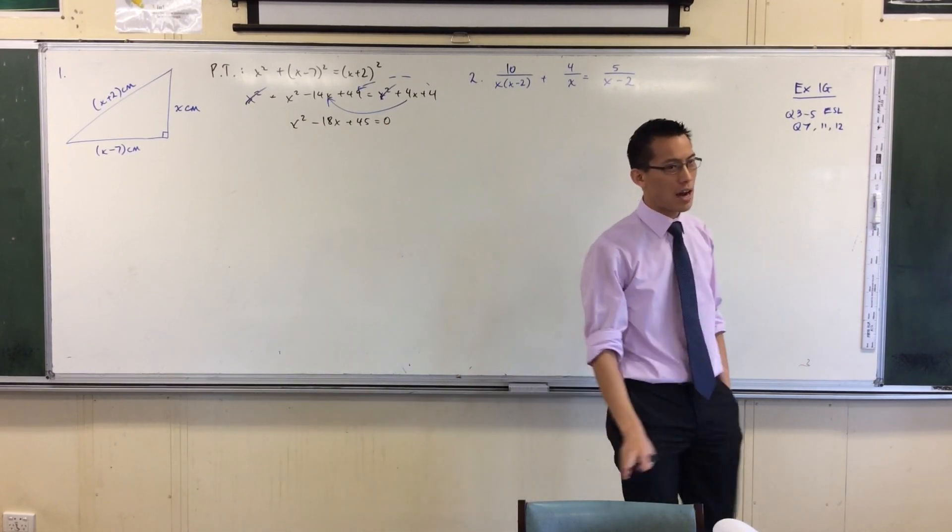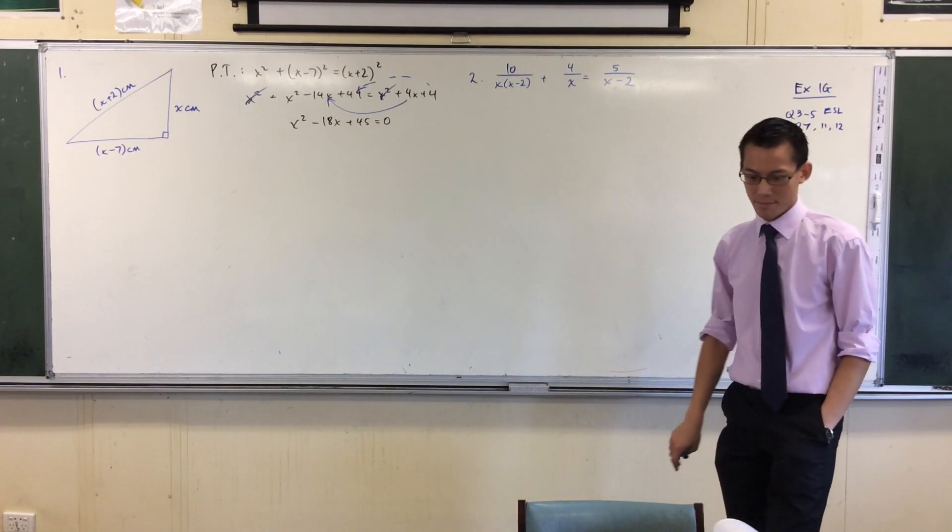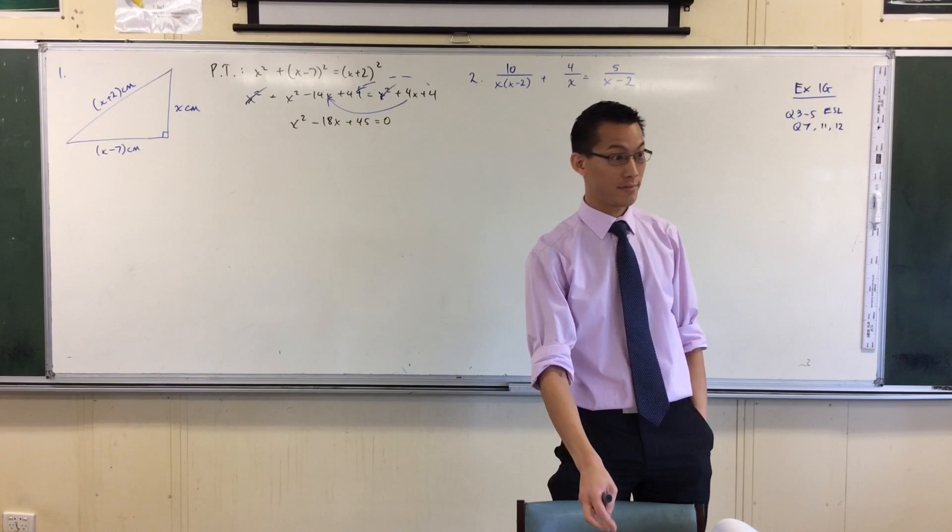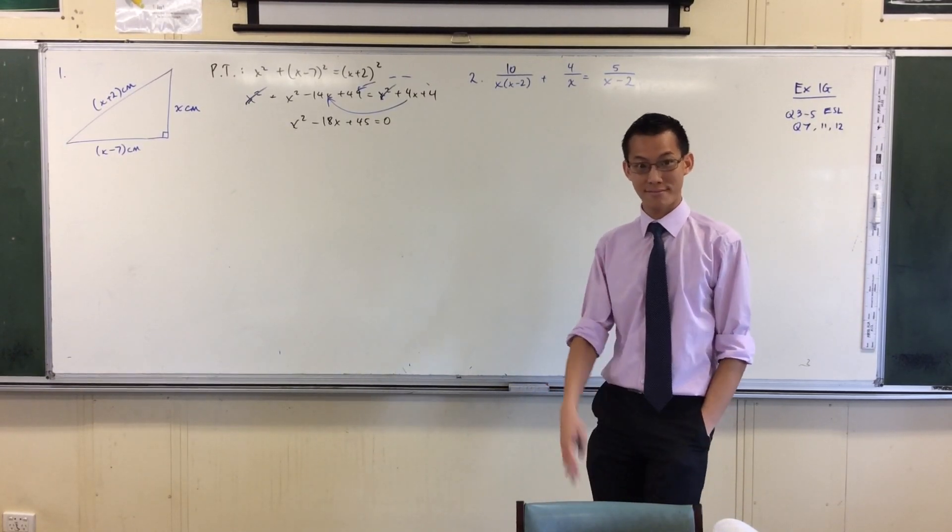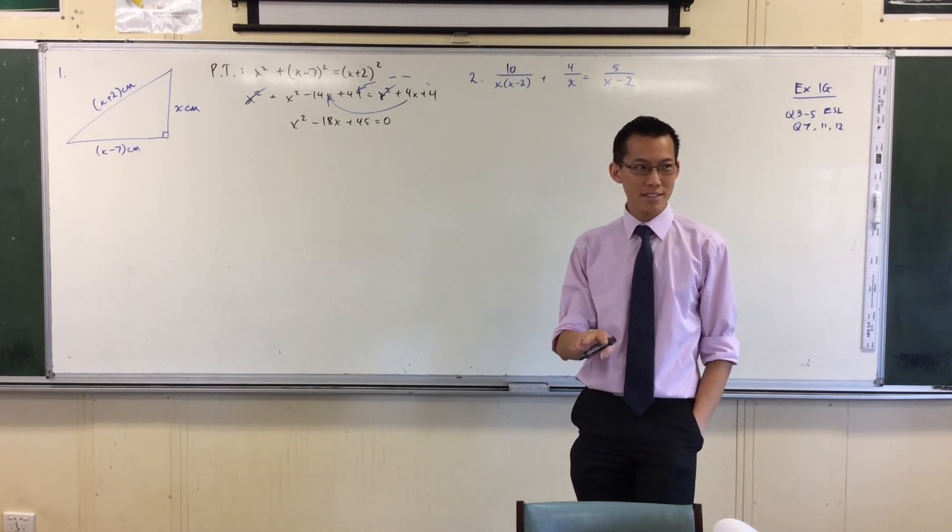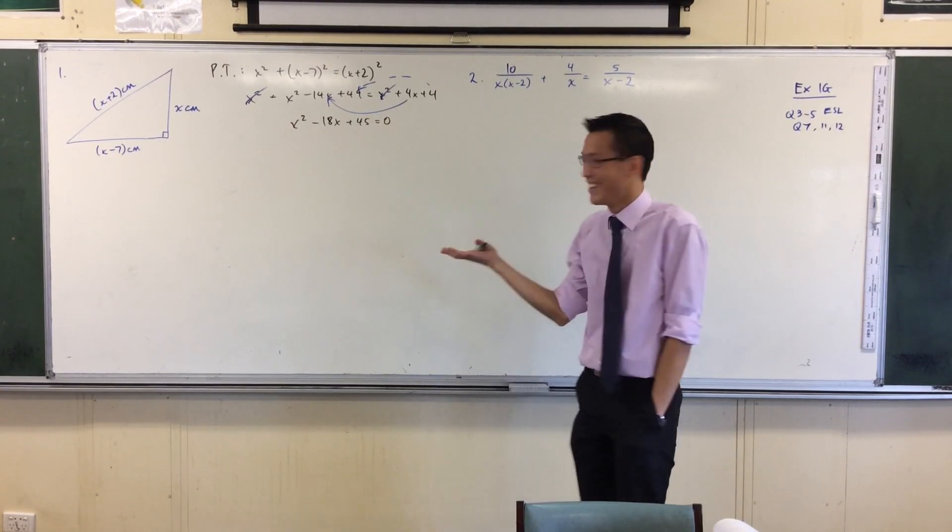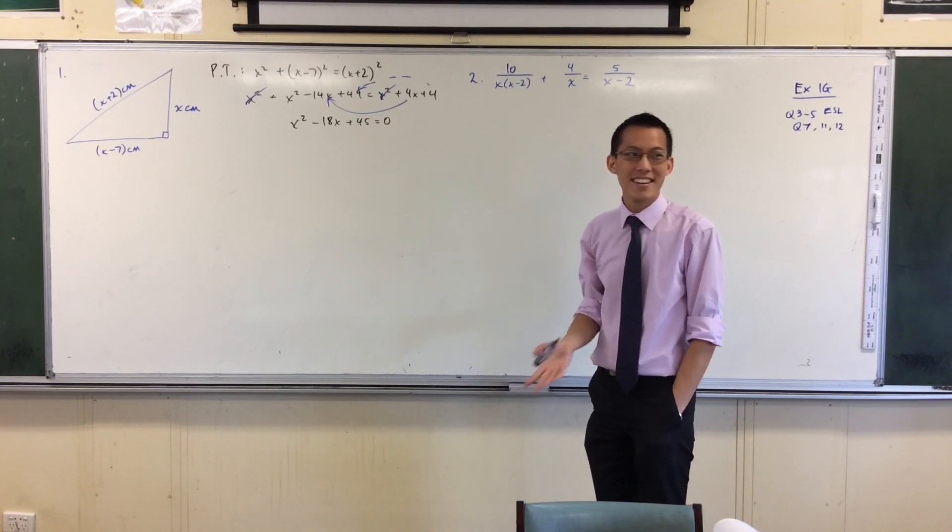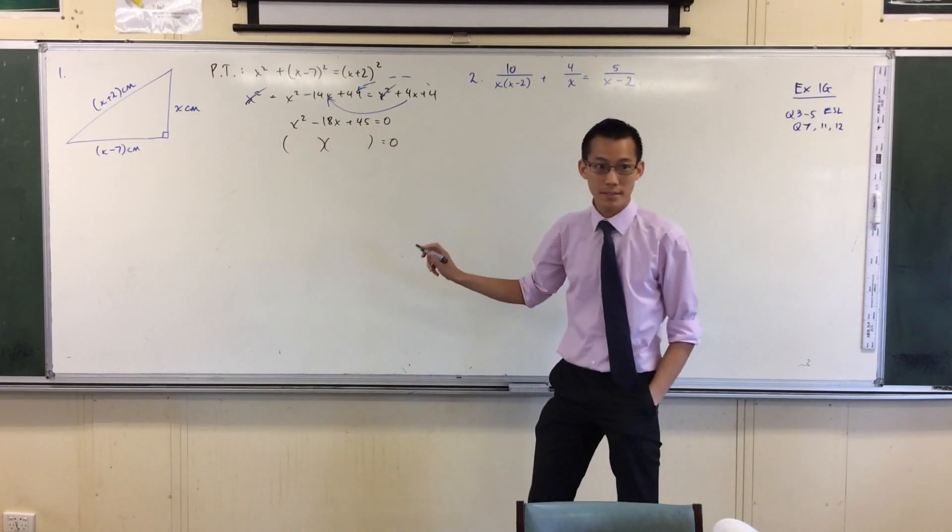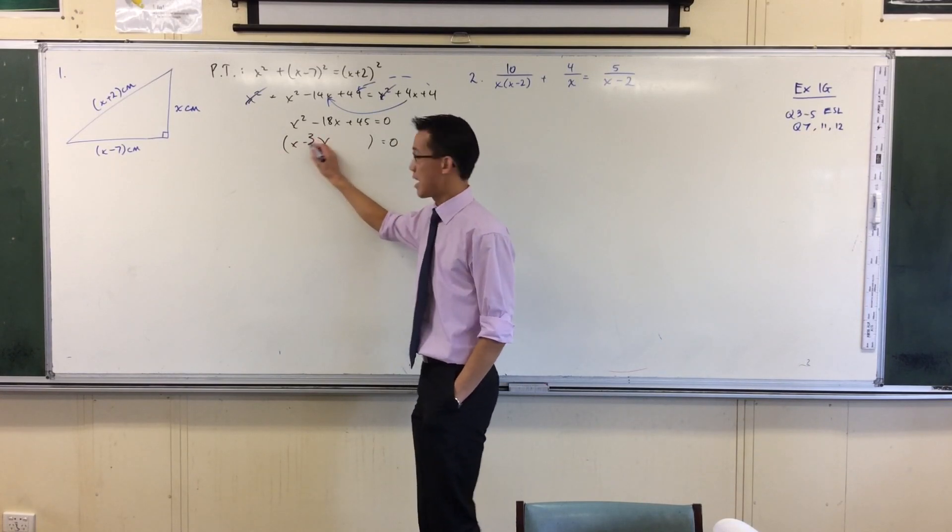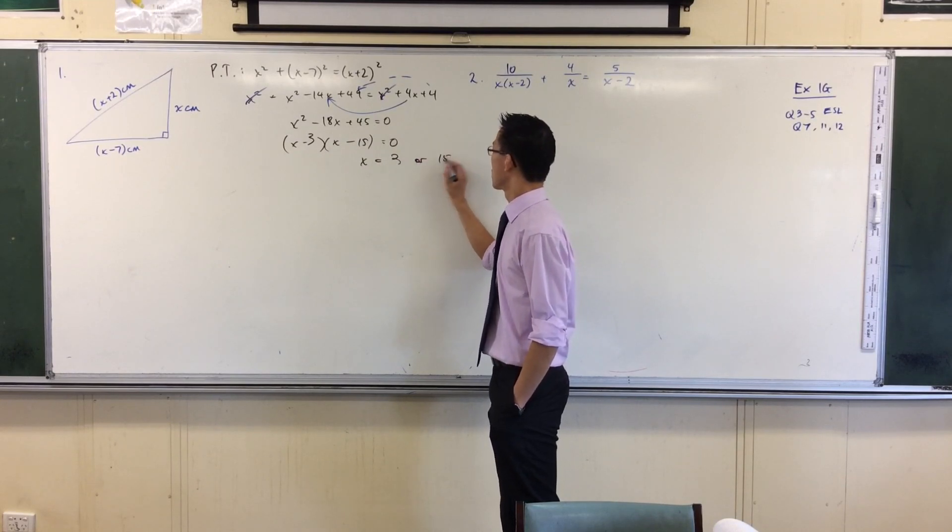Look carefully, does it factorize nicely? It's not a common one, our brains immediately go 5 and 9, forget it. But clearly there's more there, 15 and 3. So what's my expansion going to be? X minus 3, X minus 15. So now I have two solutions.